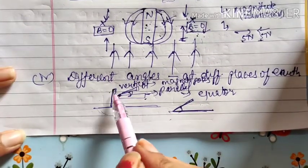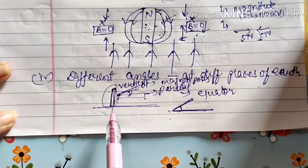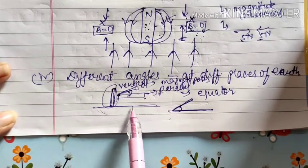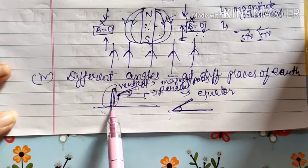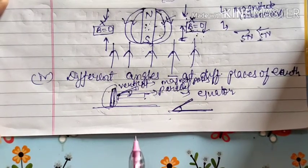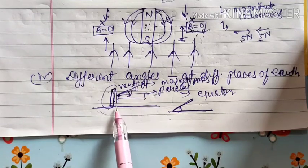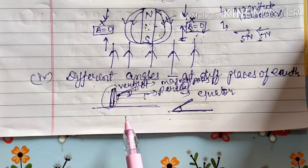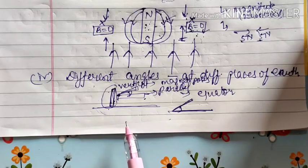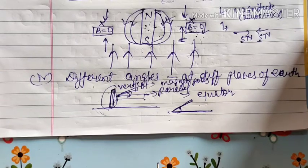This represents that your magnet is changing its behavior, which confirms that some other magnetic effect is present here — which is affecting the magnetic effect of your bar magnet. That is the magnetic effect of earth. So this is also one evidence that your bar magnet shows different angles with the horizontal at different places on earth due to the influence of earth's magnetic field. These are the four things which prove that the earth has a magnetic field.